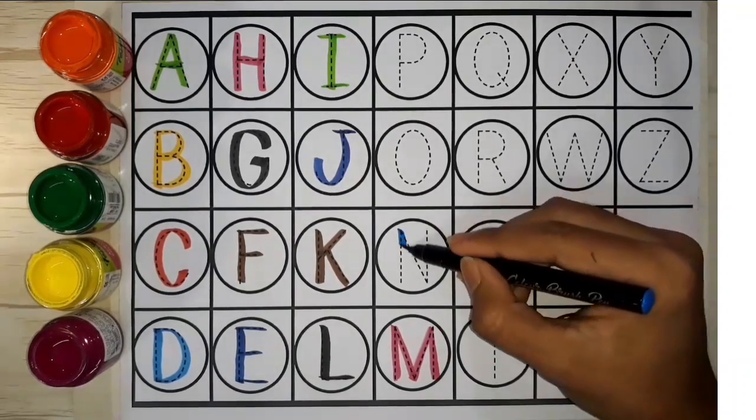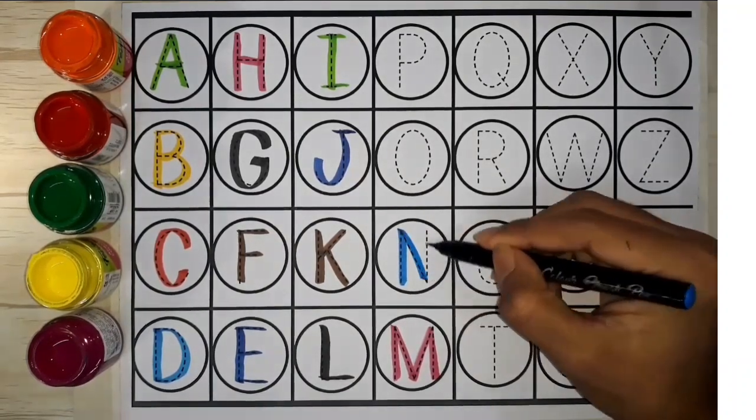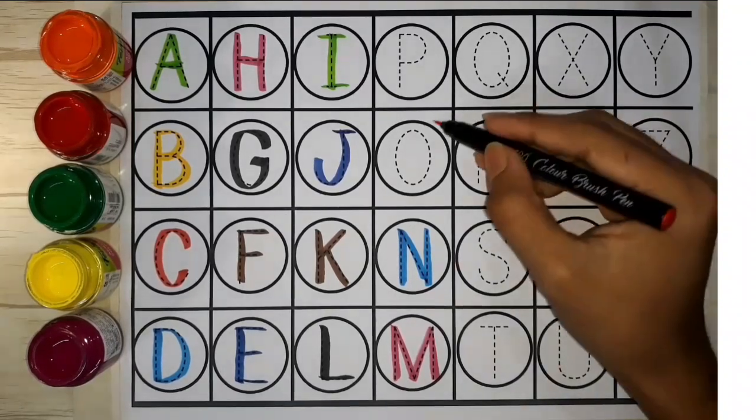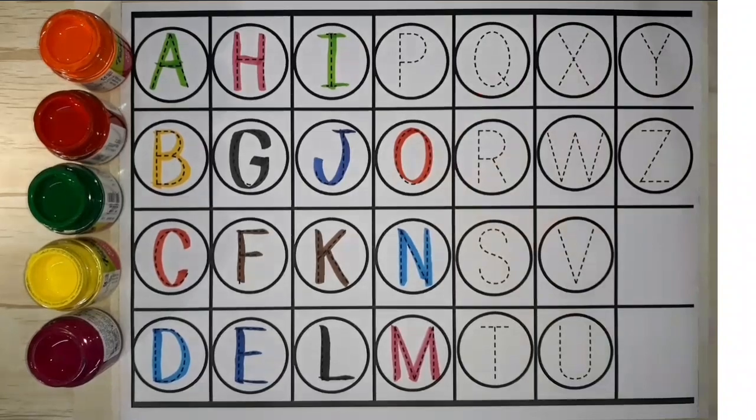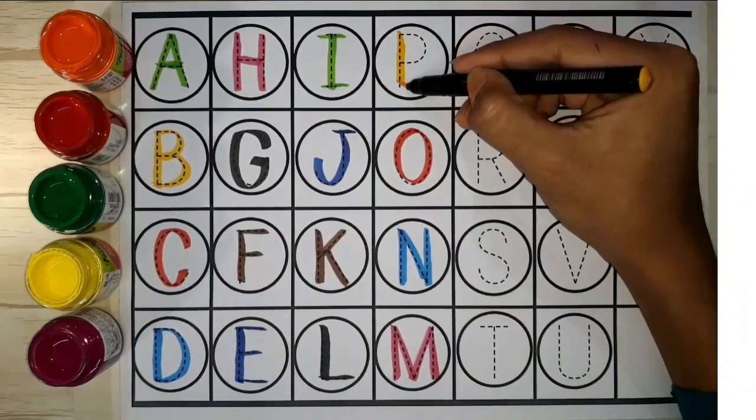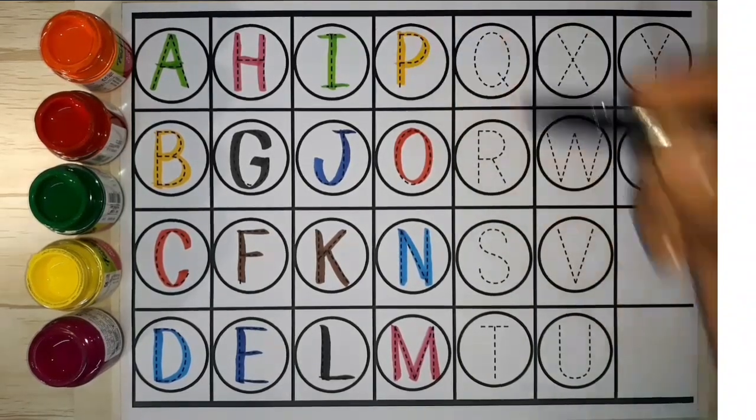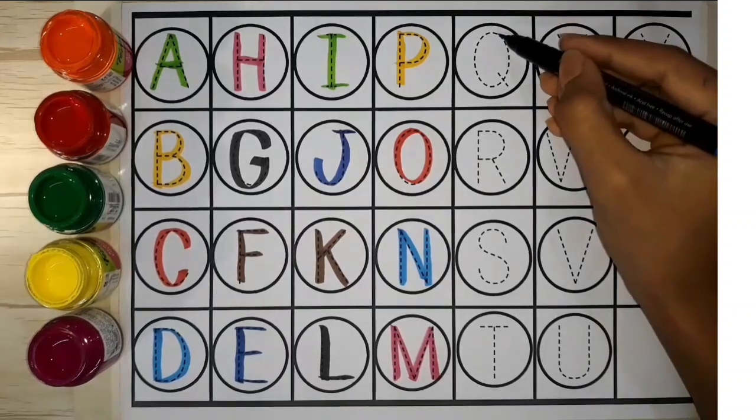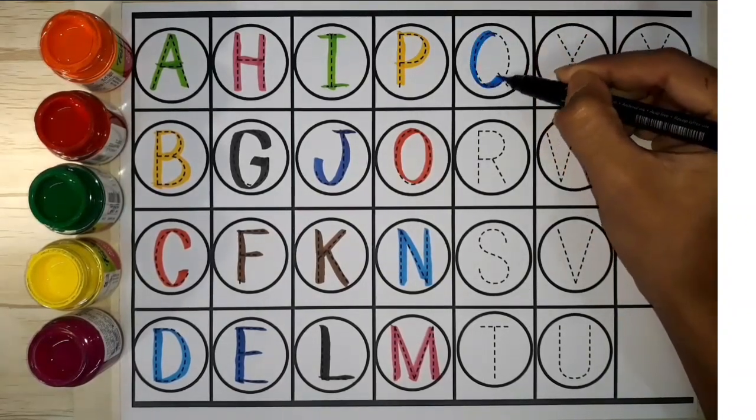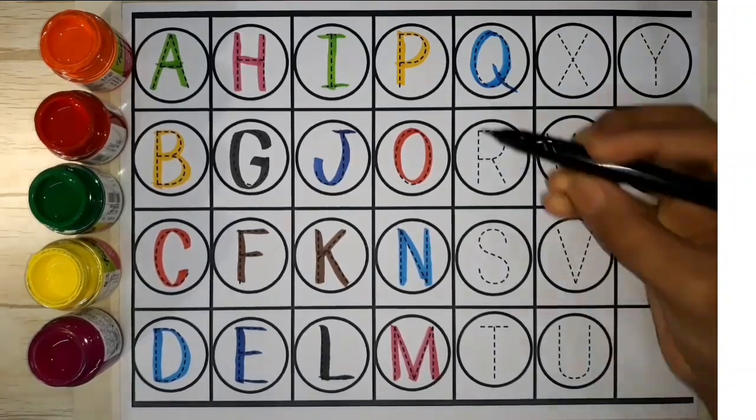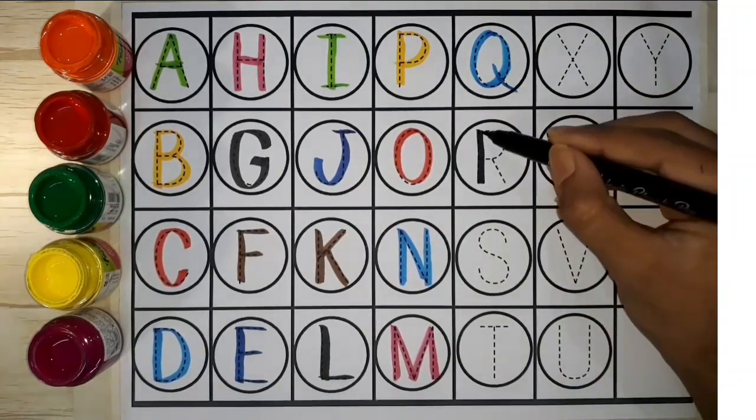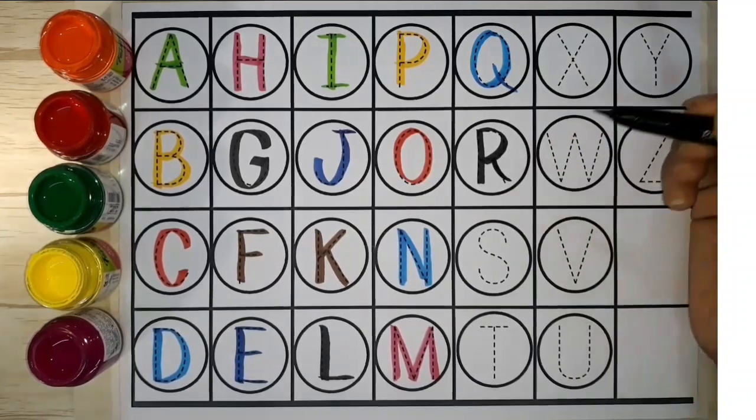N. N for nest. O. O for orange. P. P for pen. Q. Q for queen. R. R for rose.